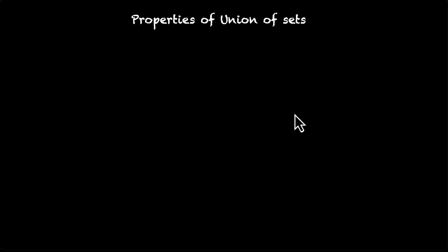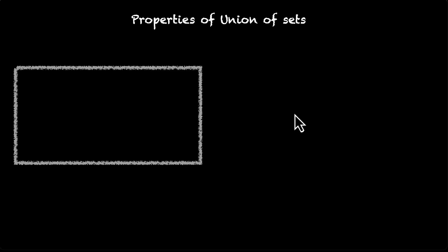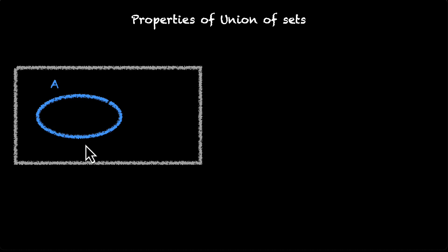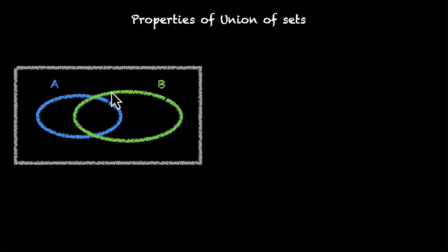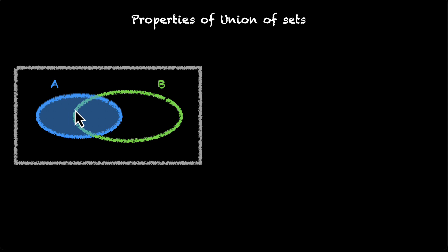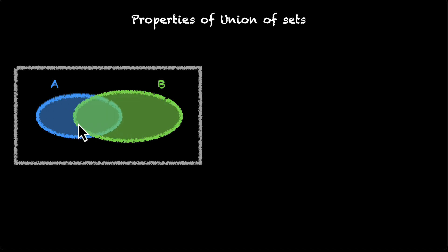Let's start with the union of sets. If we have a universal set U with a set A in it and a set B in it — the blue one is A and the green one is B — let's try to find the union of A and B. Starting with A, we cover that ground and add set B to it, giving us A union B. So A union B is everything that is blue or green — this shaded region.